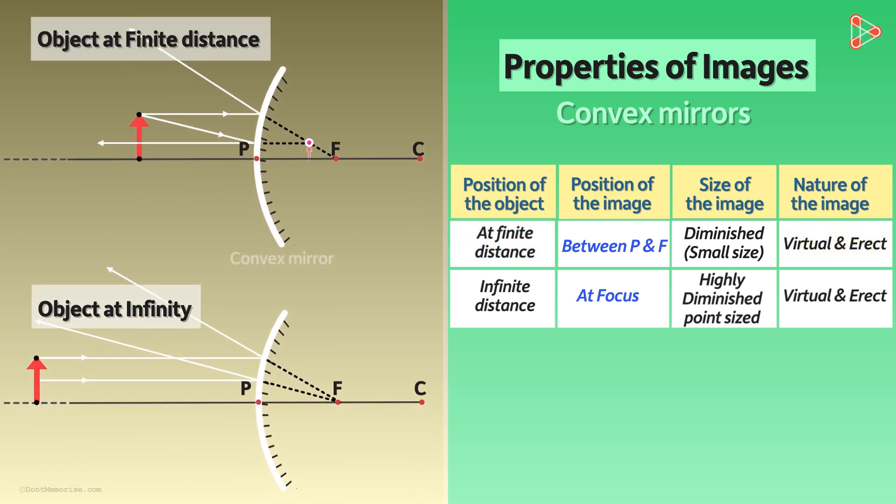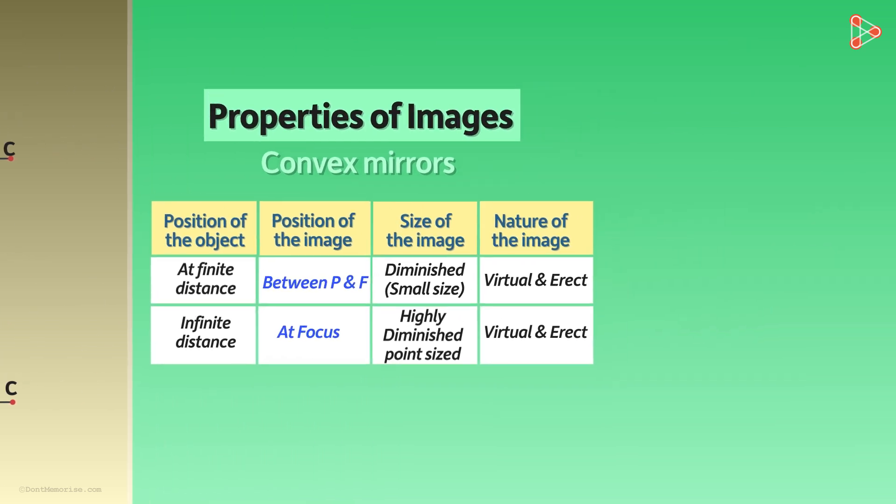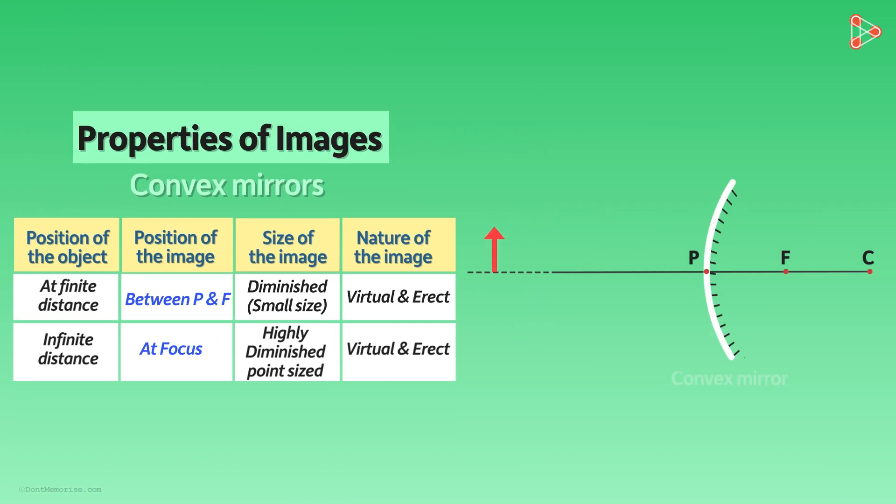So, these two are the ray diagrams representing the image and its properties. When the object is infinitely away from the mirror, we get a point size image at the focal point. And as we keep moving the object towards the mirror, the size of the image keeps increasing, and it appears to be coming closer to the back side of the mirror.